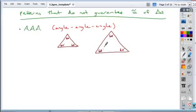No, they could be different sizes, right? You can enlarge or reduce them. So these are not always congruent, therefore the AAA pattern will not work.